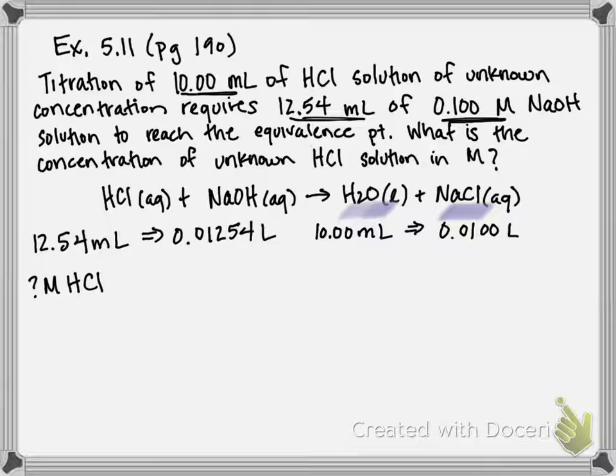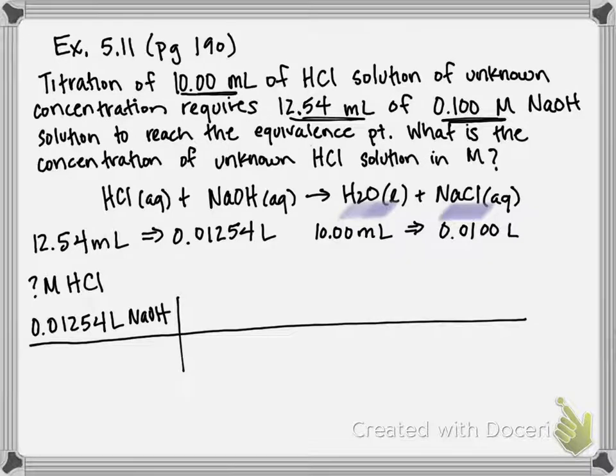And first, I'm going to put a volume. So remember, we've converted this volume to liters. So I'm going to put 0.01254 liters of NaOH first. In a titration, we're going from one volume of substance to another. So I'm going to need to be converting from liters of sodium hydroxide to moles of sodium hydroxide first. And I can do that because I have molarity up here.